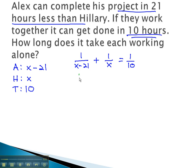We can now clear the fractions using the least common denominator of 10, x, and x minus 21. Multiplying by 10x times x minus 21 on each term will allow us to clear the fractions.